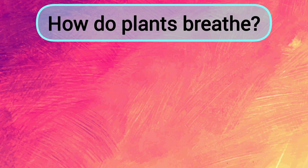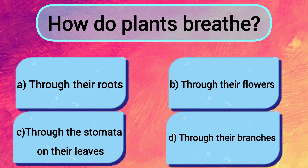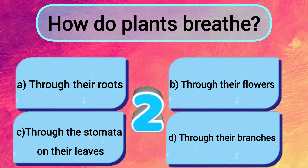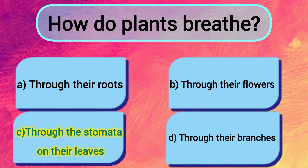How do plants breathe? A: Through their roots. B: Through their flowers. C: Through the stomata on their leaves. D: Through their branches. The answer is C — through the stomata on their leaves.